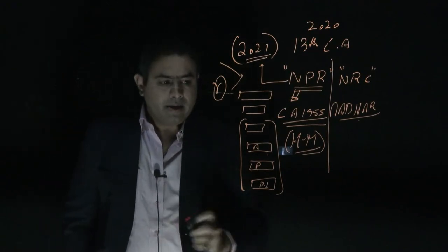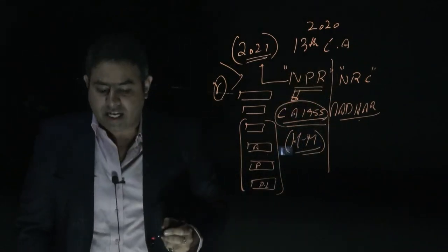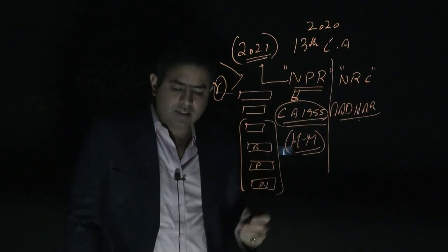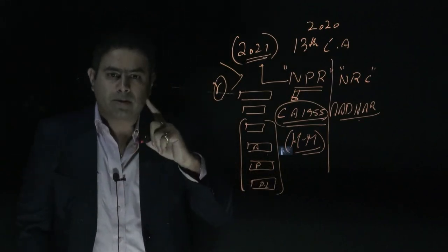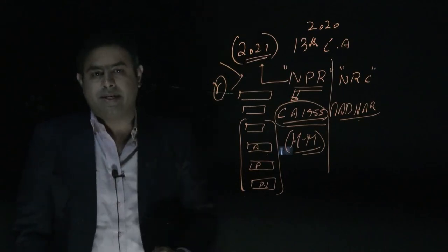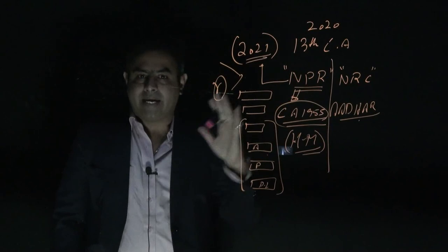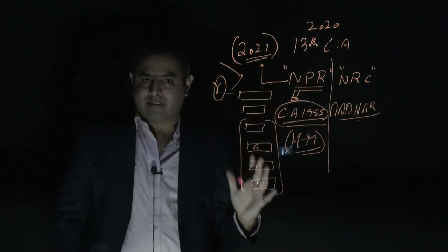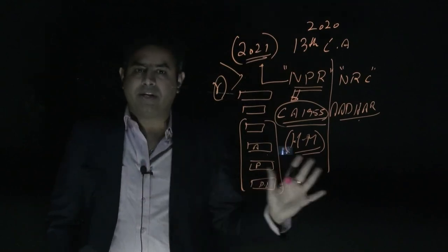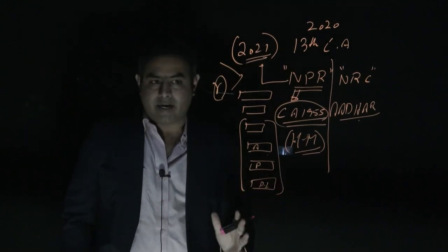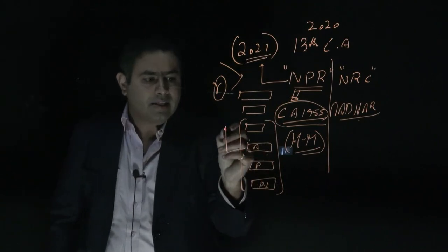Under the Citizenship Act 1955, the government does not have the right to take your personal biometric information. So NPR exercise will primarily be a demographic exercise along with other information, but you are not required to share biometric information in this exercise.